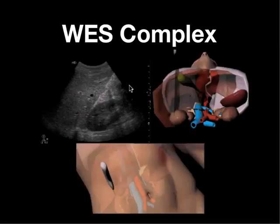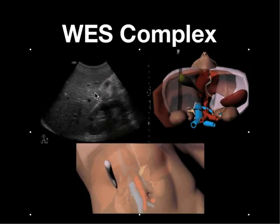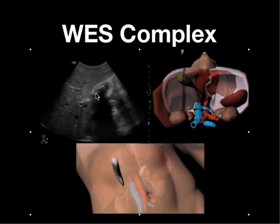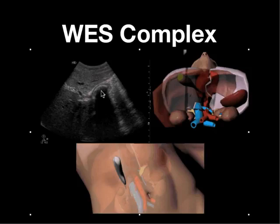In the literature you'll see the term WES complex used — that means wall, echo, shadow — and that's what you're going to see when you've got a gallbladder packed with multiple stones or one large stone: the wall, the echo, and the shadow. On this patient you really don't see any bile — it's just the wall, the echo, and the shadow.